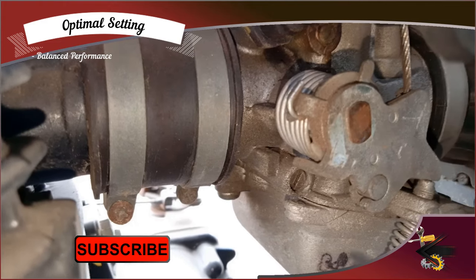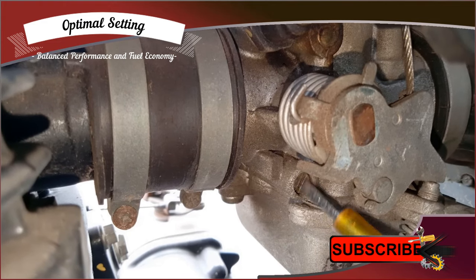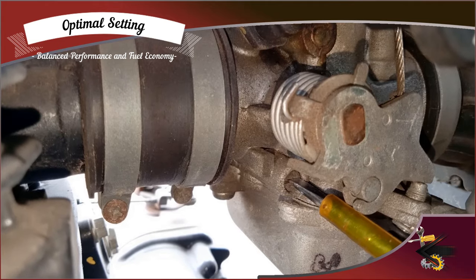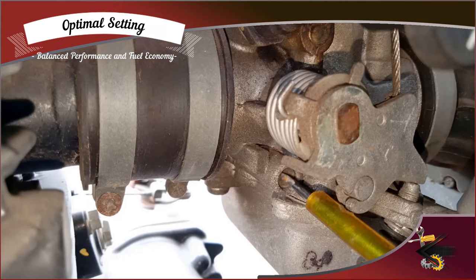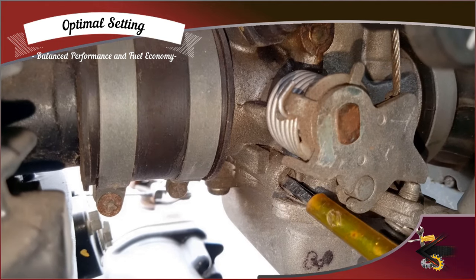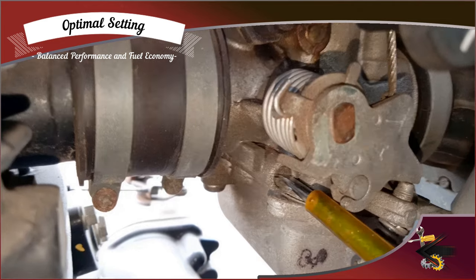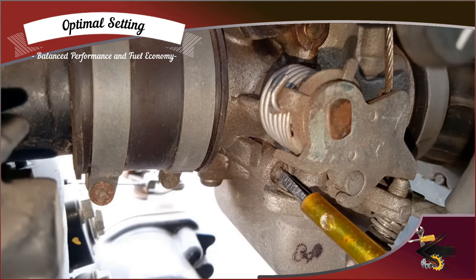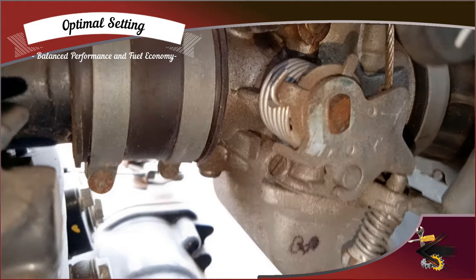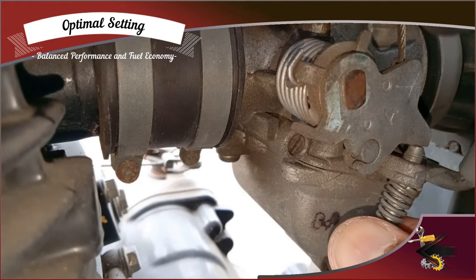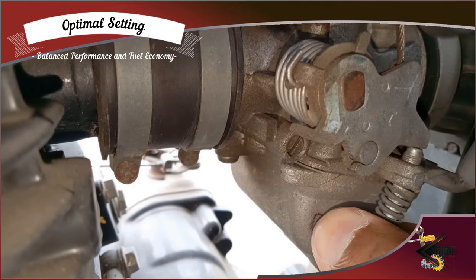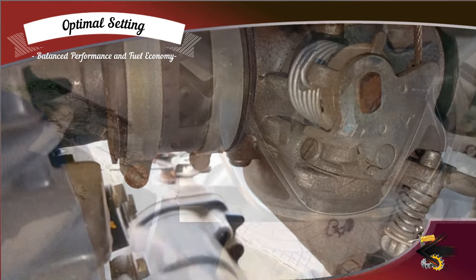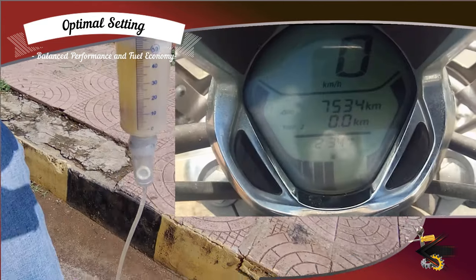Now we will set the air-fuel mixture screw to attain the optimal mixture. For that, we will unscrew the air mixture screw by 2 turns. Since it took 4 turns from the lean position to the rich position, we have to take 2 turns to set the position for optimal air-fuel mixture ratio. Now adjust the idling RPM. Let's start the test.